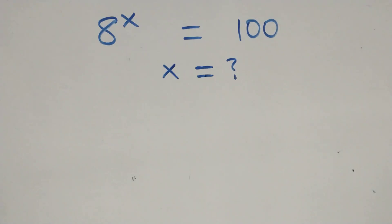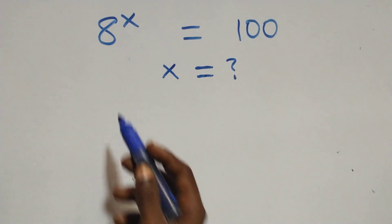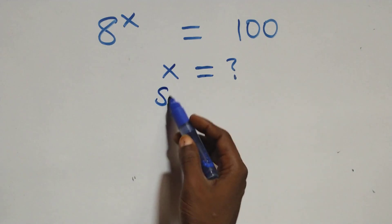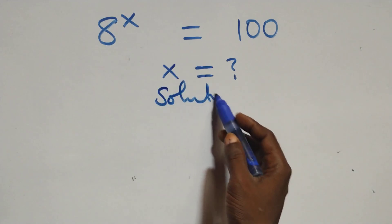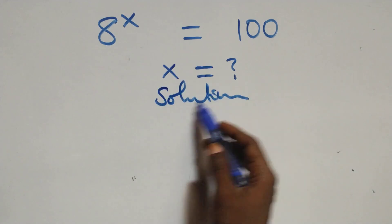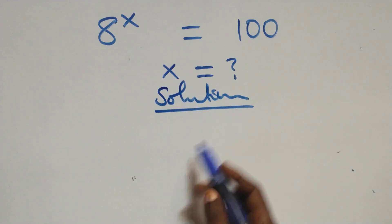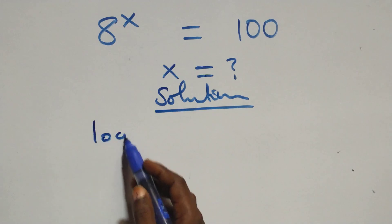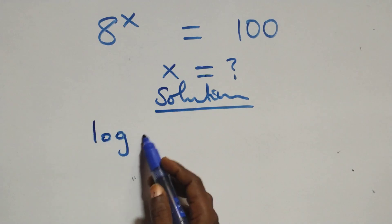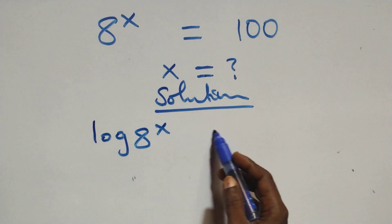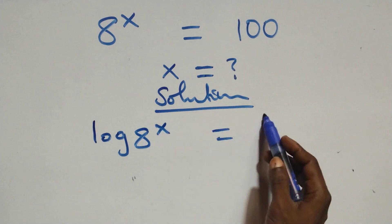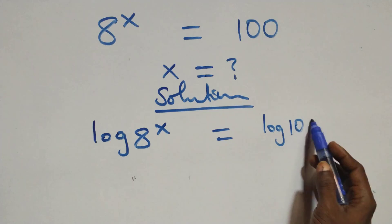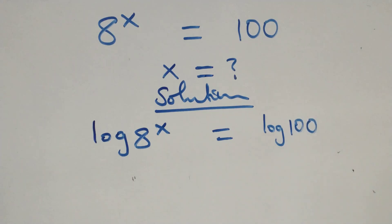Hello, you are welcome. As you can see, this is an exponential equation solution. We take the log on both sides, that is, we have log of 8 raised to power x equals to log of 100 on this side.